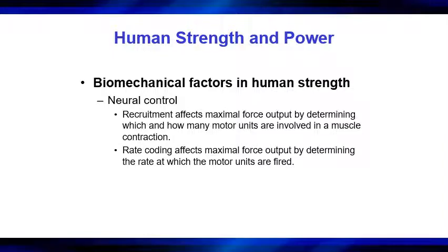Rate coding also affects force output by determining the rate at which motor units are fired — how fast those individual motor units are getting recruited, which is relevant when looking at power since it has a time component. There are three factors in muscle force production: the number of motor units involved, the size of motor units (larger size yields greater force), and the rate of firing. Muscle cross-sectional area also impacts how much strength the muscle can produce.